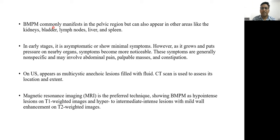BMPM commonly manifests in the pelvic region but can also appear in other areas like the kidneys, bladder, lymph nodes, liver, and spleen. In early stages it is asymptomatic or shows minimal symptoms; however, as it grows and puts pressure on nearby organs, symptoms become more noticeable. These symptoms are generally non-specific and may involve abdominal pain, palpable masses, and constipation. On ultrasound, it appears as a multicystic anechoic lesion filled with fluid. CT scan is used to assess its location and extent. MRI is the preferred technique, showing BMPM as hypointense on T1-weighted images and hyperintense to intermediate-intense with mild wall enhancement on T2-weighted images.